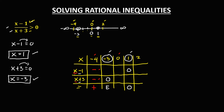Then x equals 0. For the numerator, 0 minus 1 is negative, so this one is negative. For the denominator, 0 plus 3, that's positive 3, so this one is positive. Negative divided by positive — dividing unlike signs — the result is negative. Then the last one, for x equals positive 2: positive 2 minus 1, that's positive 1, so this one is positive. Then positive 2 plus 3, that's positive 5, so positive divided by positive — same sign — the result is positive.